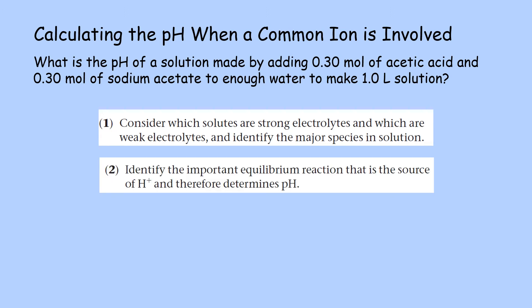First, we must consider which solutes are strong electrolytes and which are weak electrolytes, and then identify the major species in the solution. Then, identify the important equilibrium reaction that is the source of the hydrogen ions, and therefore, will determine the pH.